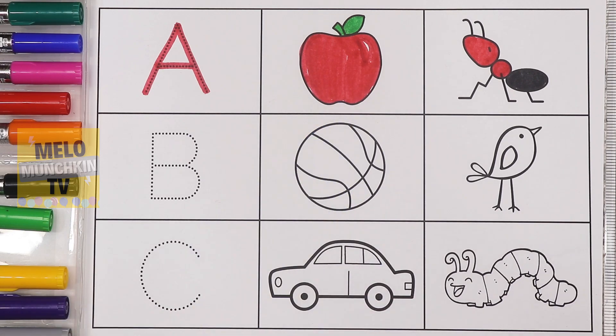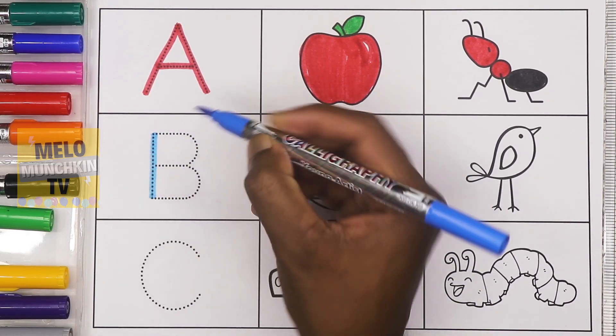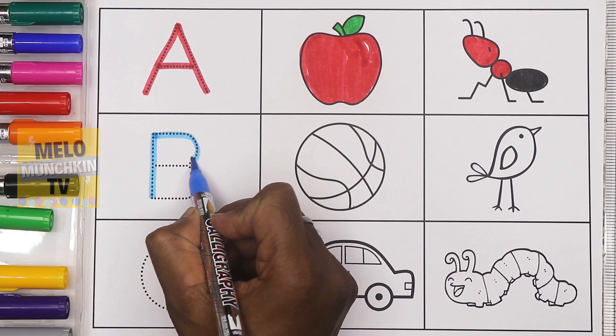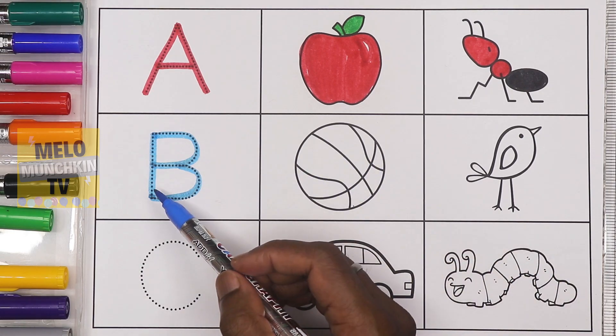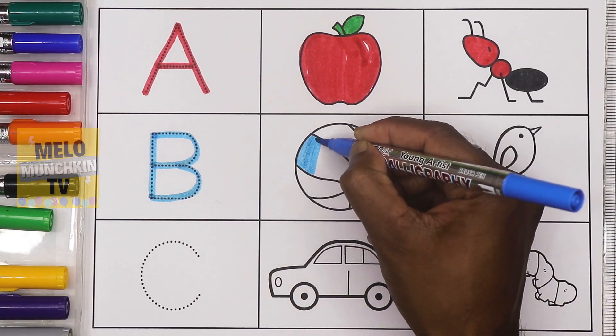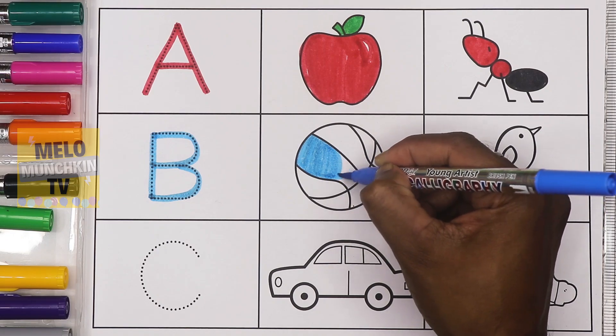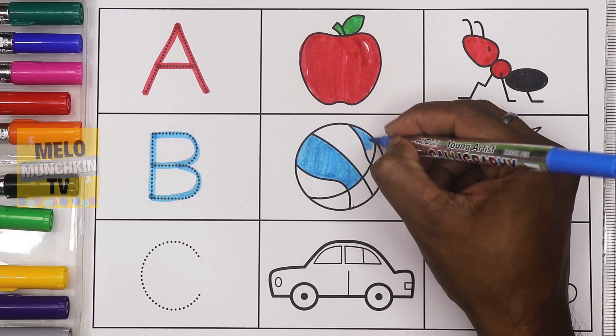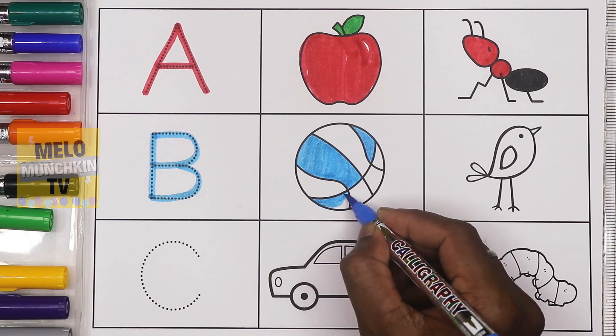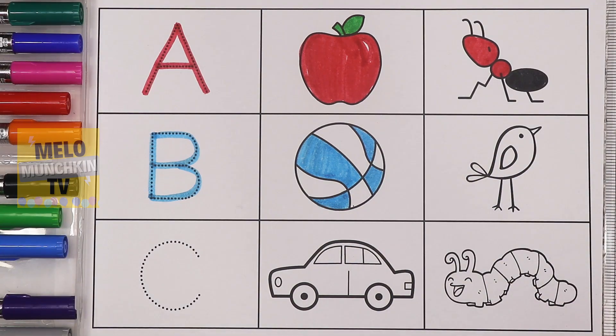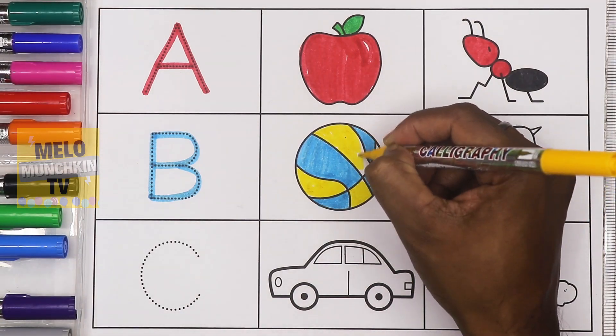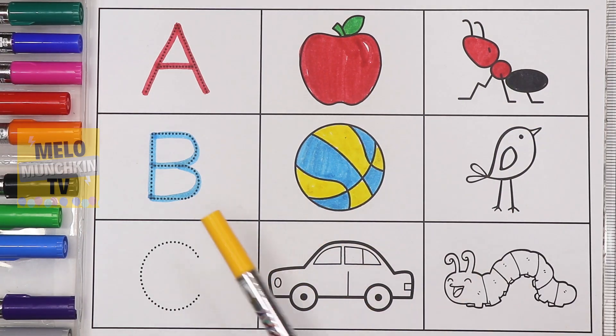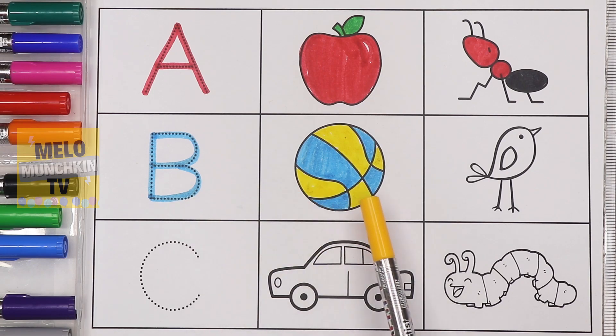Blue color. B. This is letter B. B for ball. B for ball. Yellow color. So B for ball. B for ball.